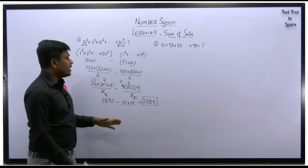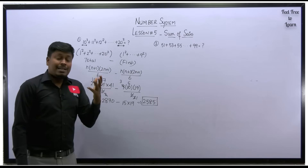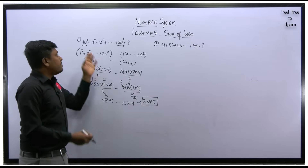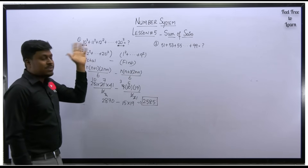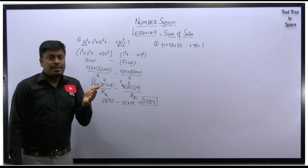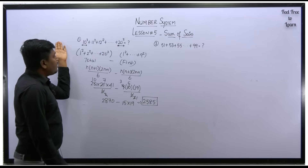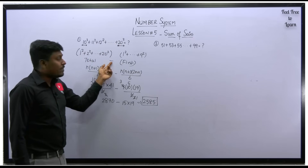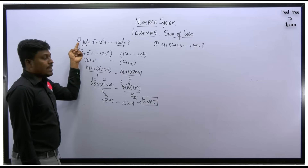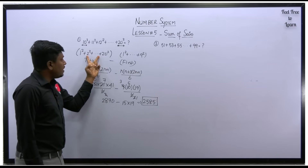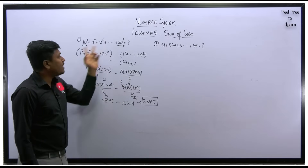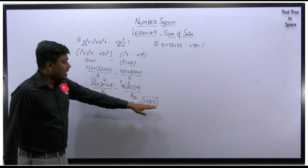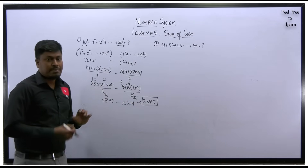So if a number starts from 1 or from 2, we have a formula for odd and even. But if the starting number is different — like 10 square or 20 square — you need to: find the total starting from 1, then subtract the total up to the previous number. The resultant will be the sum for the given set, like 10 square till 20 square. So 2585 is the answer.